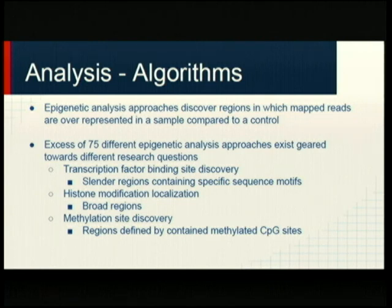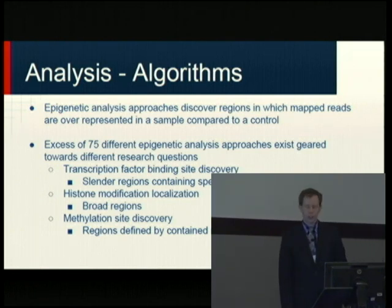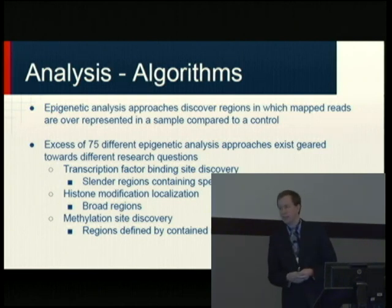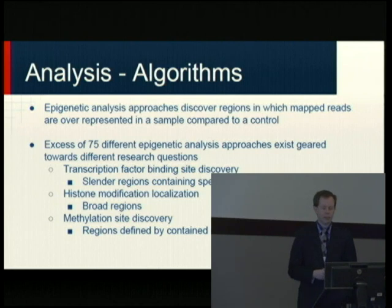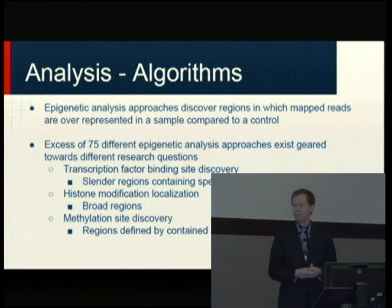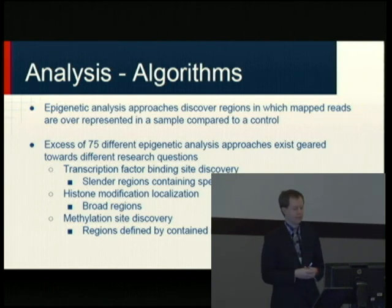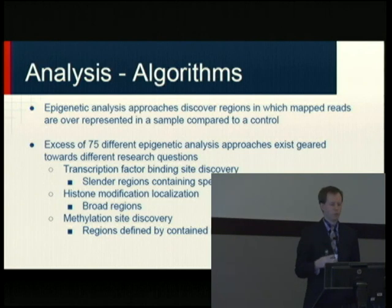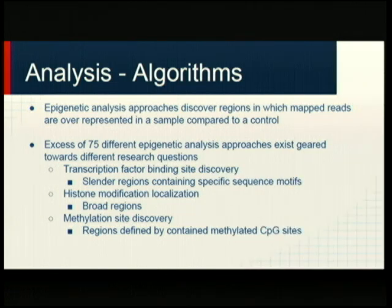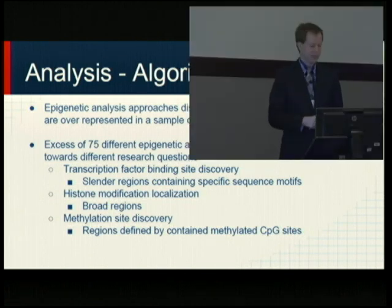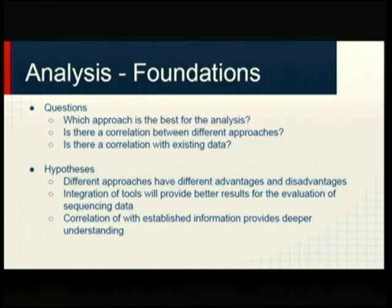We found about 75 different peak calling approaches, each with a different focus. You see a large variety for ChIP-seq analysis: transcription factor binding site discovery, and a large number for histone modification. Transcription factor binding sites are slender regions containing specific motifs; histone modifications are much wider, so the algorithmic approaches differ considerably. Methylation site discovery focuses on very punctuated regions of interest.